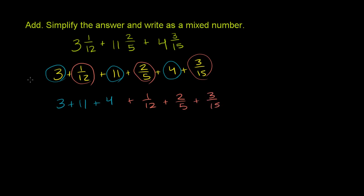Now the blue part's pretty straightforward. We're just adding numbers. 3 plus 11 is 14, plus 4 is 18. So that part right there is just 18.